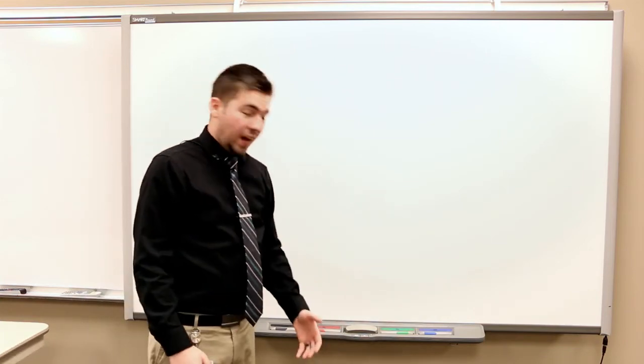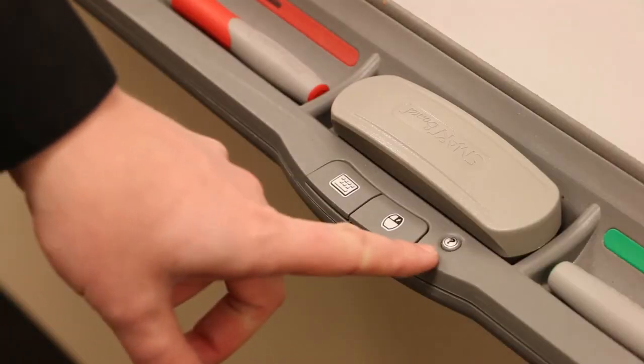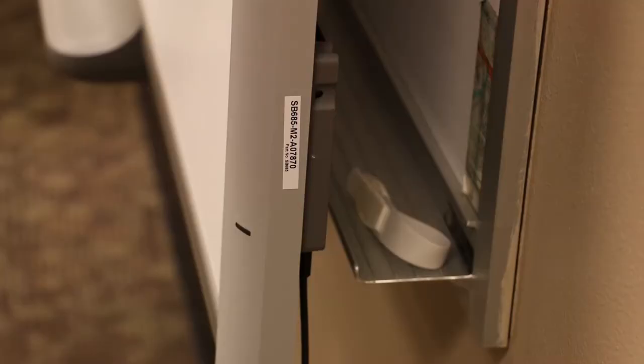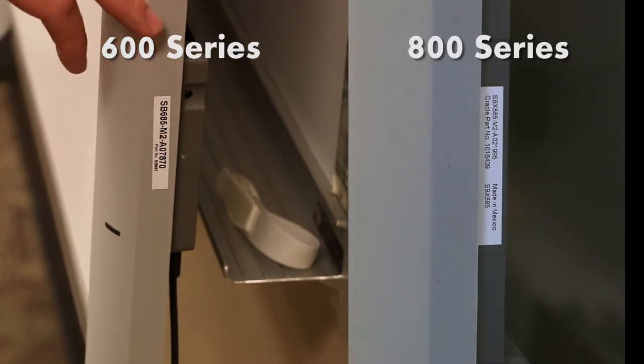And to get into the advanced calibration window, you can click on this small little question mark directly underneath the eraser. Just like the 800 series, on the side here, this is going to be where you're going to find your serial number for your board.